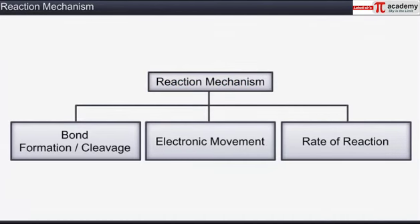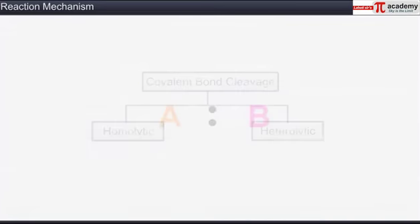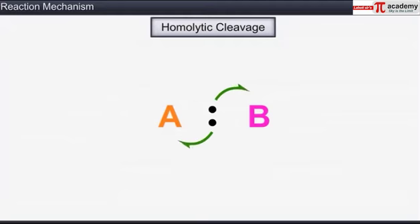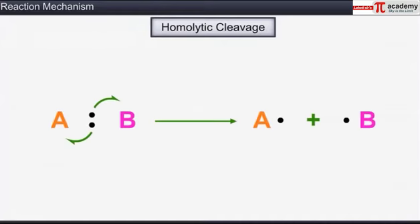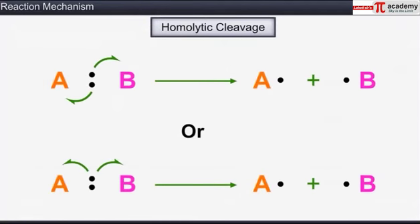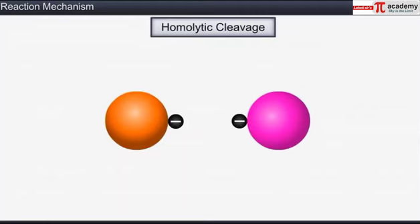Let's study each step in detail. A covalent bond can get cleaved either by homolytic cleavage or by heterolytic cleavage. In homolytic cleavage, a bond breaks equally in such a way that each atom gets one electron of the shared pair. A fish hook or half-headed arrow is used to show the movement of a single electron. Homolytic cleavage results in the formation of neutral atoms or groups with one unpaired electron, known as free radicals.